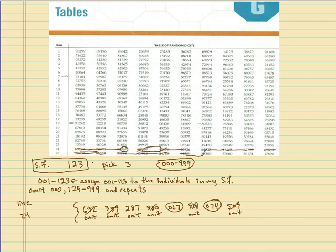Then 098 — that person is chosen! So the three people selected were 067, 074, and 098.